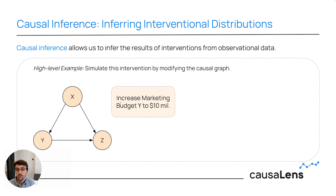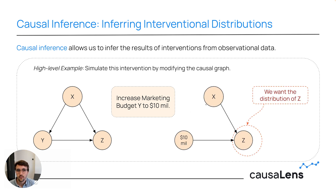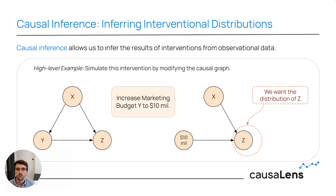Now assume that we increase our marketing budget to $10 million. What we'll have to do in the causal graph is actually destroy this edge from X to Y, because we do an intervention to Y, and that means that nothing else can influence it. Which means that we'll have to cut off any incoming edges into our intervention node, and this will look like this. Once we have done this modification of the causal graph, we then need to observe how the distribution of Z changes in this modified causal graph.